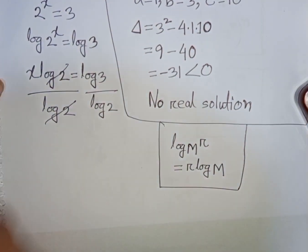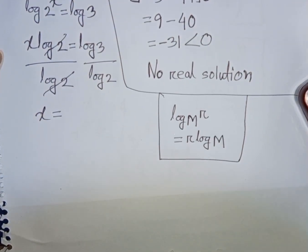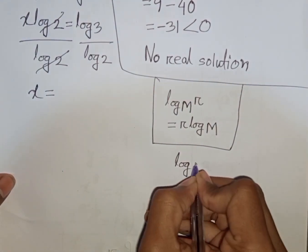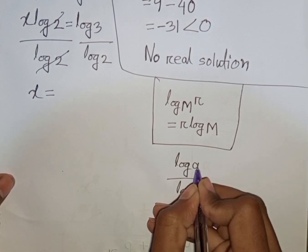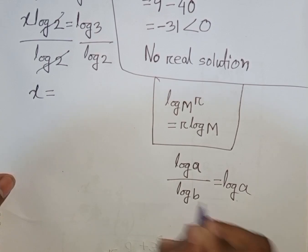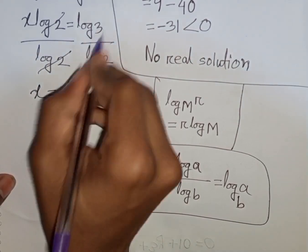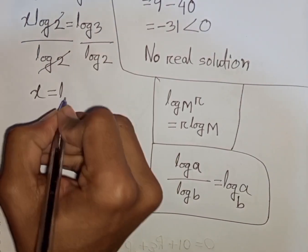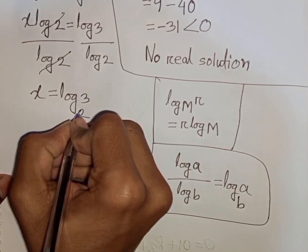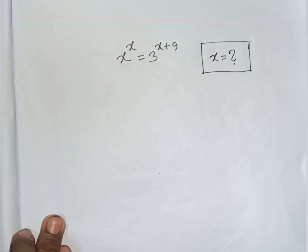So x equals log 3 divided by log 2. Applying the change of base formula — log a divided by log b equals log of a base b — we get x equals log 3 base 2. This is the value of x and the final answer for the first problem.